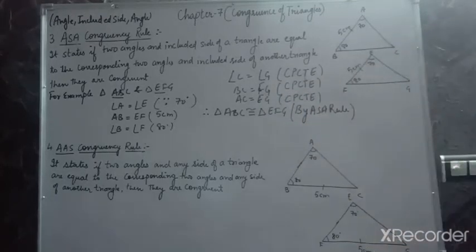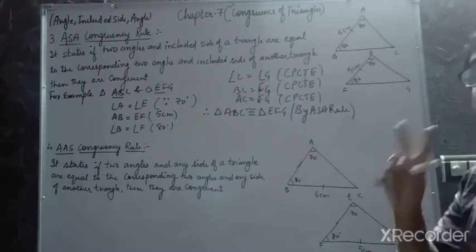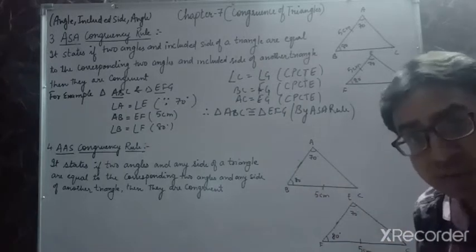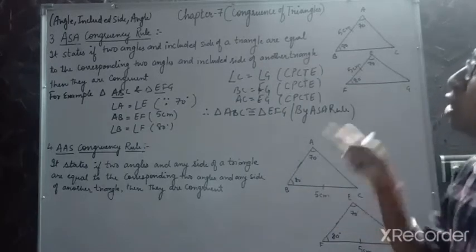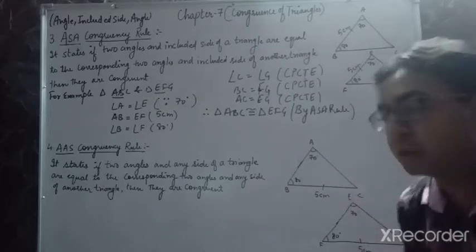So, what is the main difference between SAS and ASA? In SAS, two sides and an included angle are used. In ASA, two angles and an included side are used.